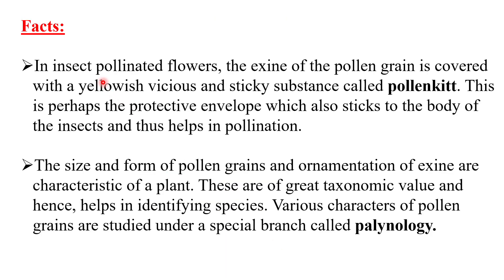In insect-pollinated flowers, the exine of the pollen grain is covered with a yellow, viscous, and sticky substance called pollen kitt. This is a protective envelope which also sticks to the body of the insect and thus helps in pollination. The size, form, and ornamentation of exine are characteristic of a plant species and are of great taxonomic value. Various characters of pollen grains are studied under a special branch known as palynology.